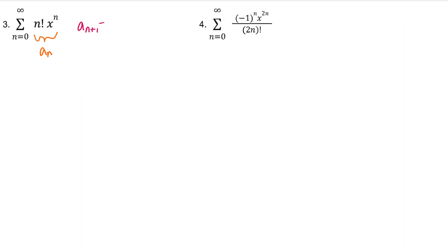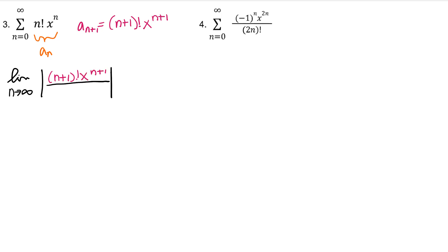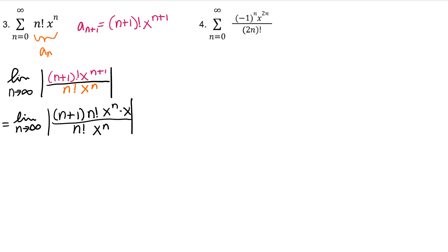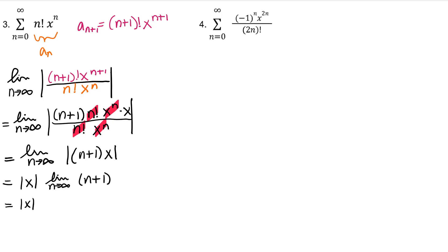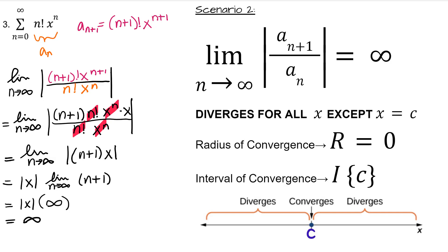Let's do number 3. Expand (n+1)! to be (n+1) · n!. Even if we take the absolute value of x out of the limit entirely, we would still get infinity times |x|, which is infinity. This is scenario 2: when the ratio test gives you infinity, then your interval of convergence is a single number — the center C of the series.